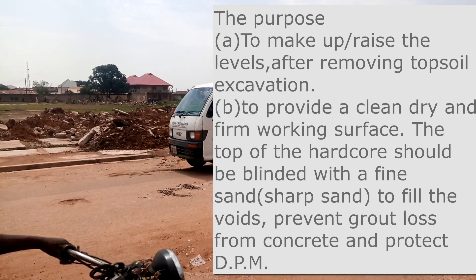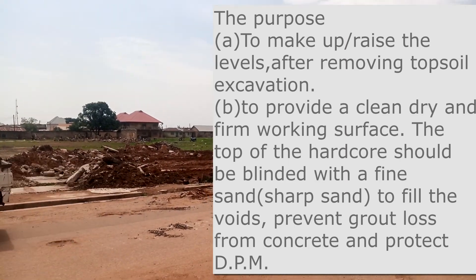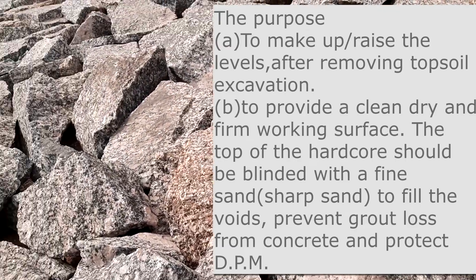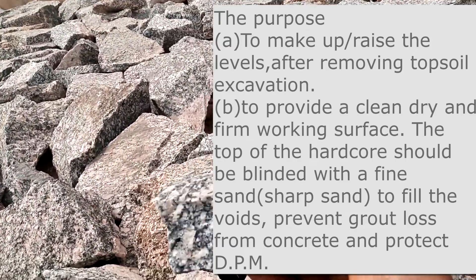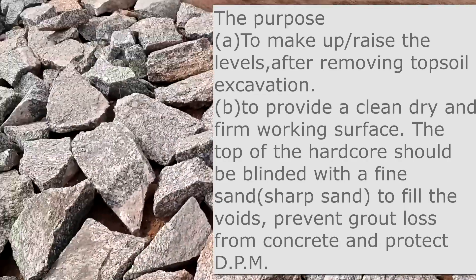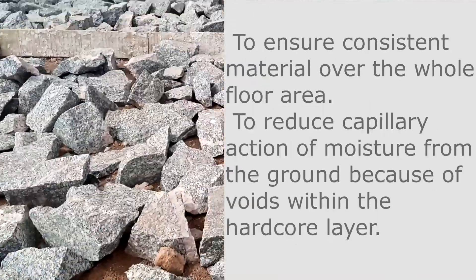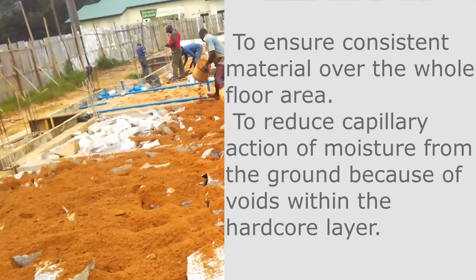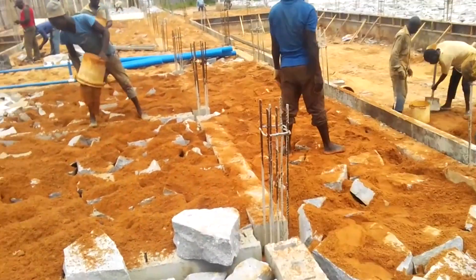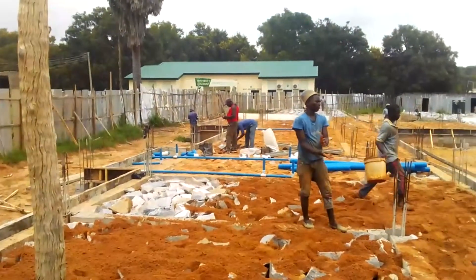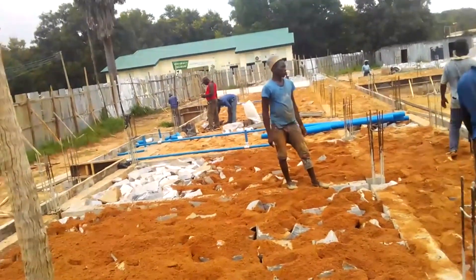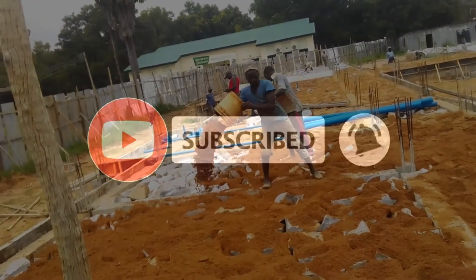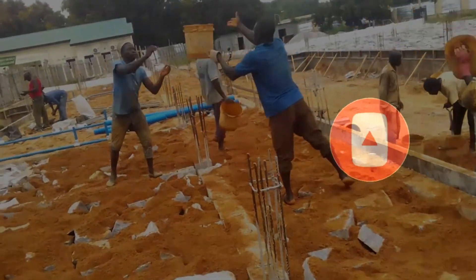Hardcore materials are used essentially to raise the level of the topsoil excavation to a desired level where the concrete bed will be placed. They also provide a clean, dry, and firm working surface, ensure consistency in the material over the floor, and reduce capillary action of moisture from the ground because of voids within the hardcore layer. Materials used as hardcore include bricks, stones, concrete rubble, and pavings from excavated surfaces.